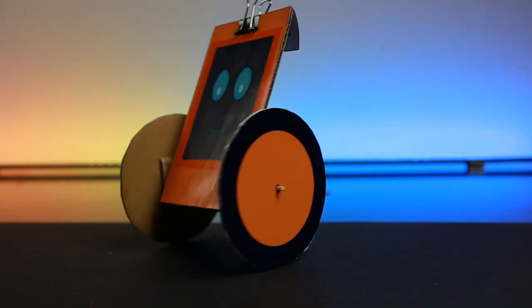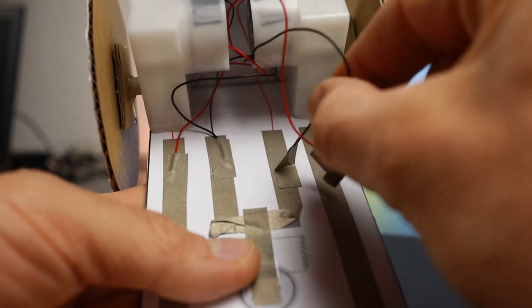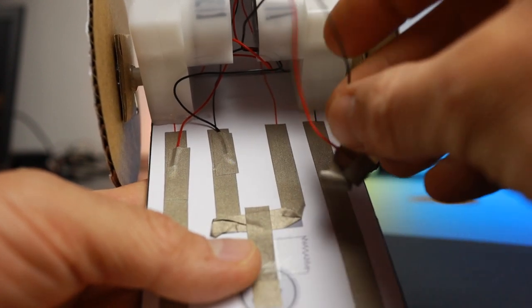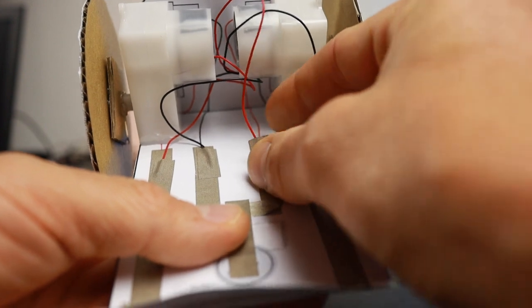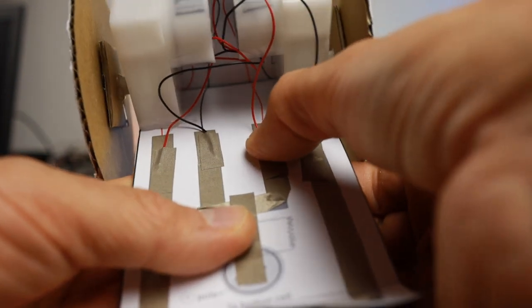If the robot runs in circles, you need to switch the polarity of the backward spinning motor by exchanging the attached wires. If the robot runs backwards, exchange the two wires of both motors.